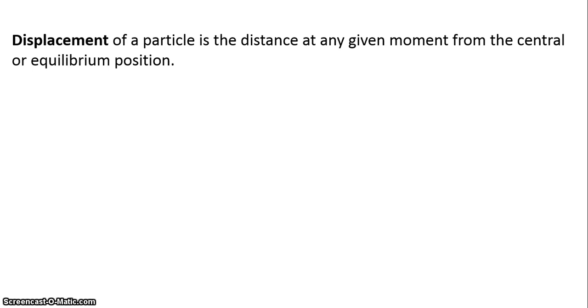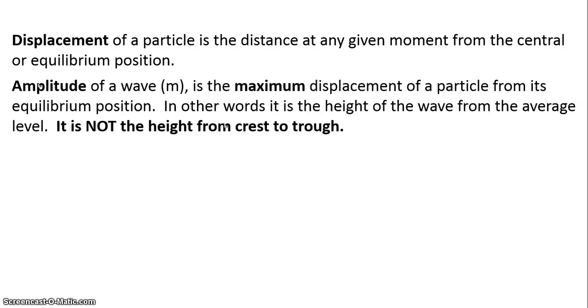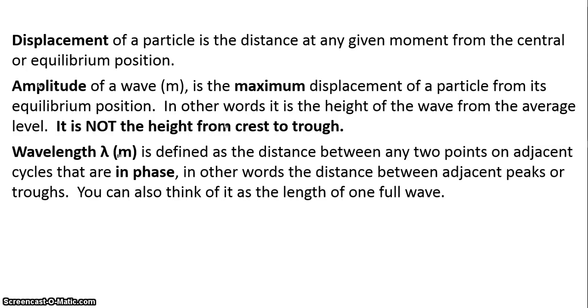So those definitions, and again you need to learn these: displacement is the distance at any given moment from the equilibrium position that line in the middle. The amplitude is the maximum displacement from its equilibrium position so remember we're going from the centre line to a peak not from a peak to a trough. The wavelength is the distance between any two points on adjacent cycles that are in phase but it's easier to remember it as the distance between adjacent peaks or adjacent troughs. You can also think of it as the length of one full wave but for the sake of an exam say it's the distance between a peak to a peak or a trough to a trough.